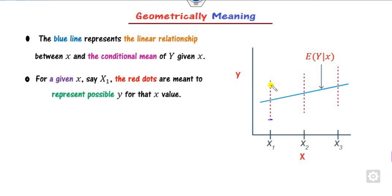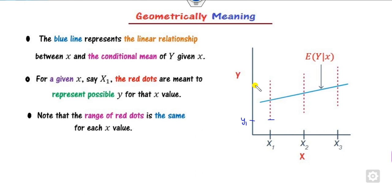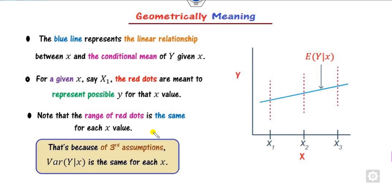The red dots represent possible values of y: say y1 and y2 corresponding to x1, and y1-prime and y2-prime corresponding to x2. The range for x1 is y2 minus y1, and similarly for x2 the range is y2-prime minus y1-prime. These ranges must be equal for all x values — the reason being the third assumption that the variance is the same for each x.